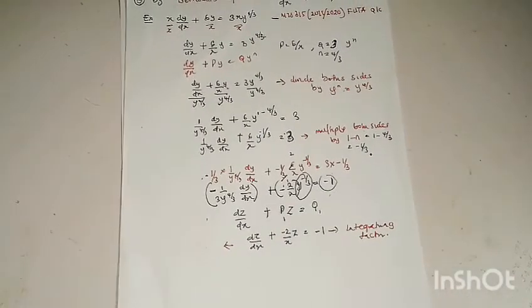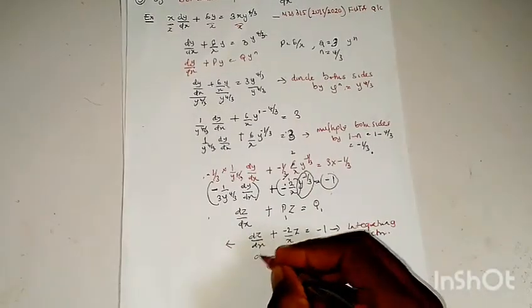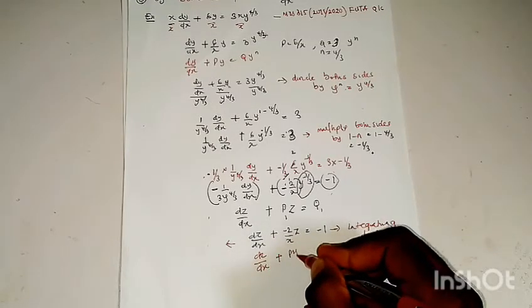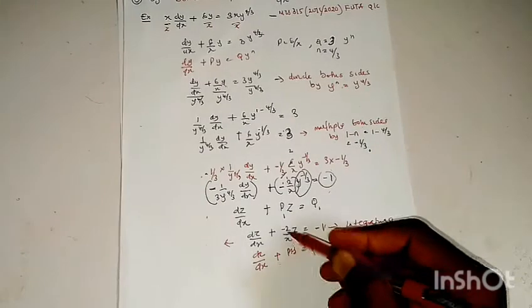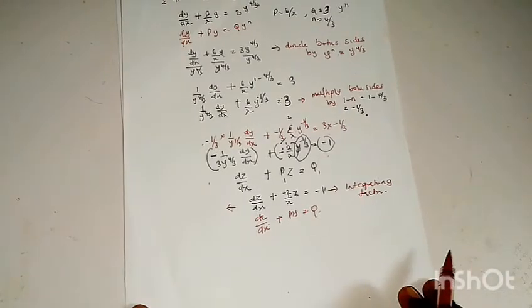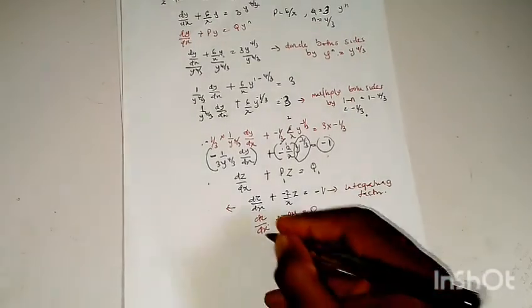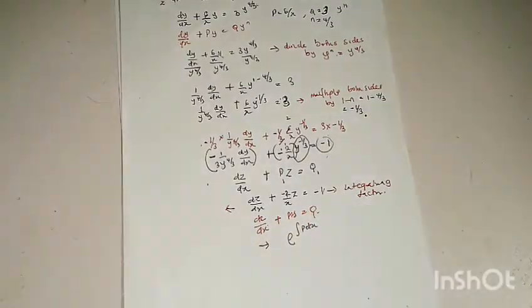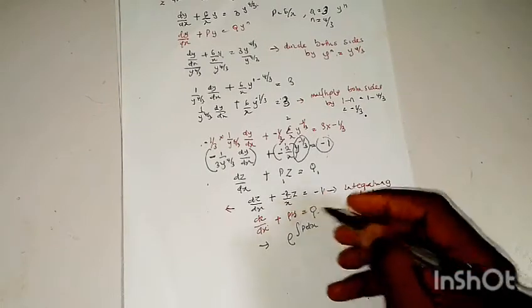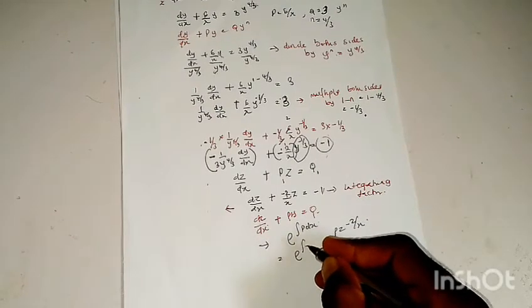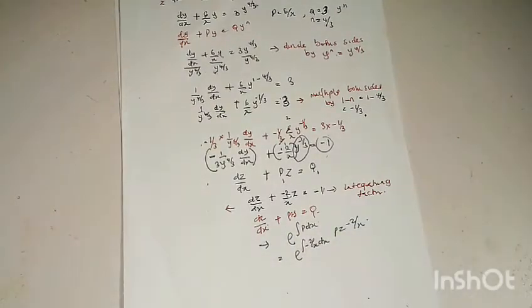We can solve this using integrating factor method, since it follows the form dz/dx + p·z = q. The first step is to find our integrating factor. The integrating factor is e^(∫p dx). Here, comparing the two equations, p = −2/x. So the integrating factor is e^(∫(−2/x) dx).